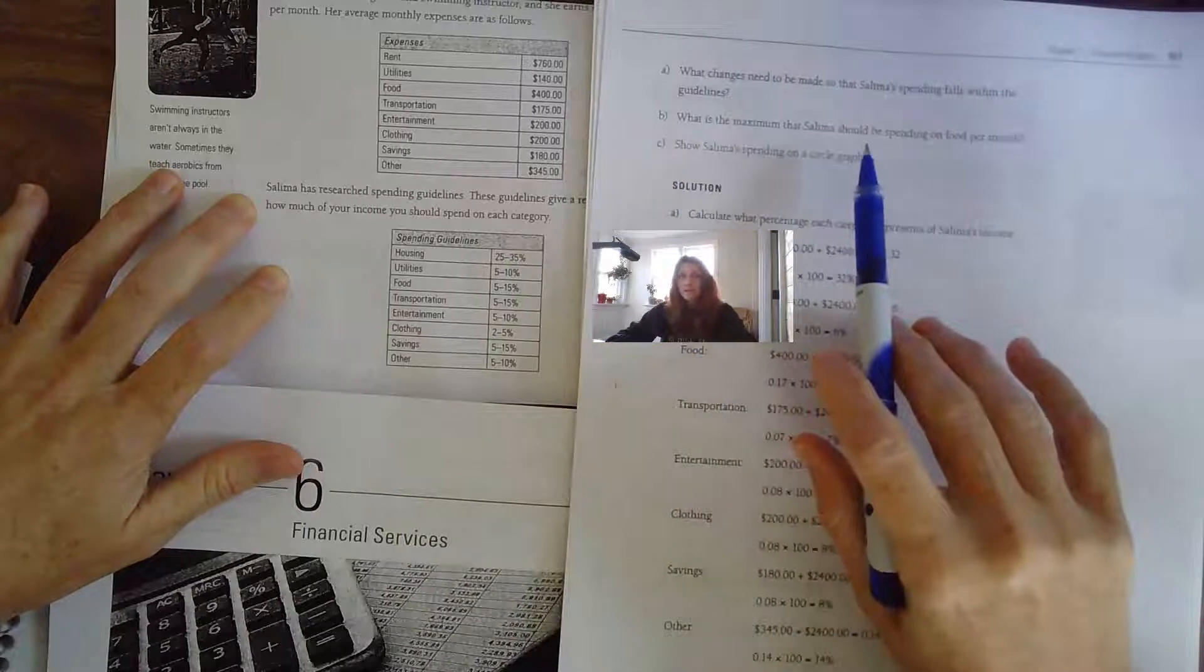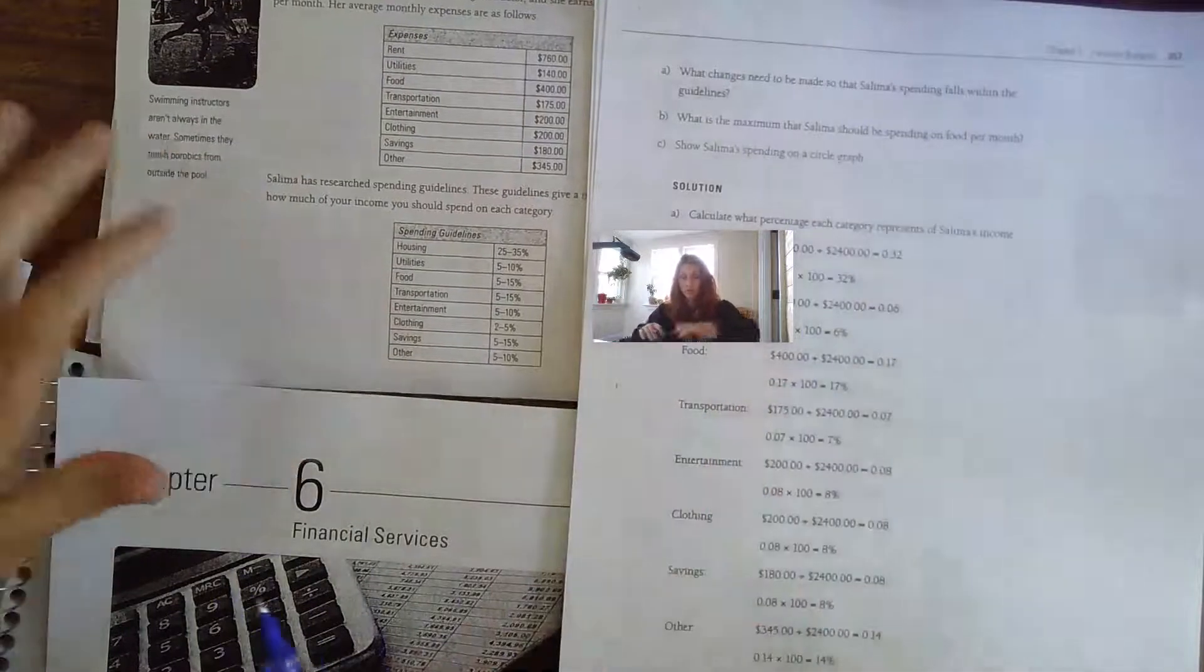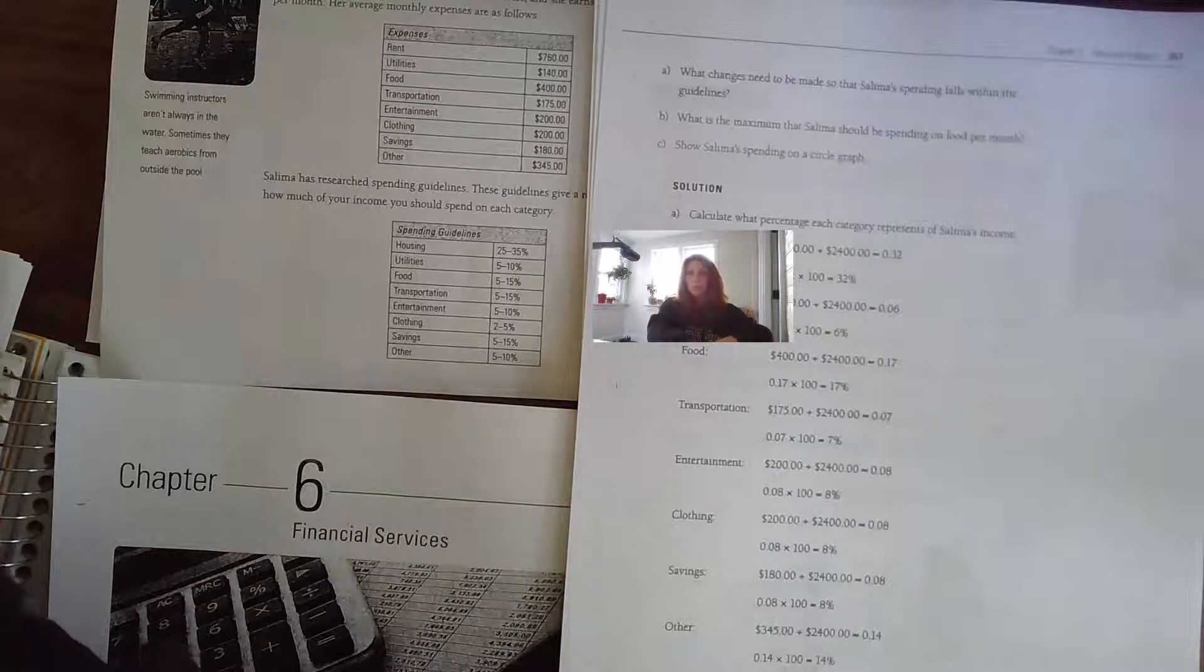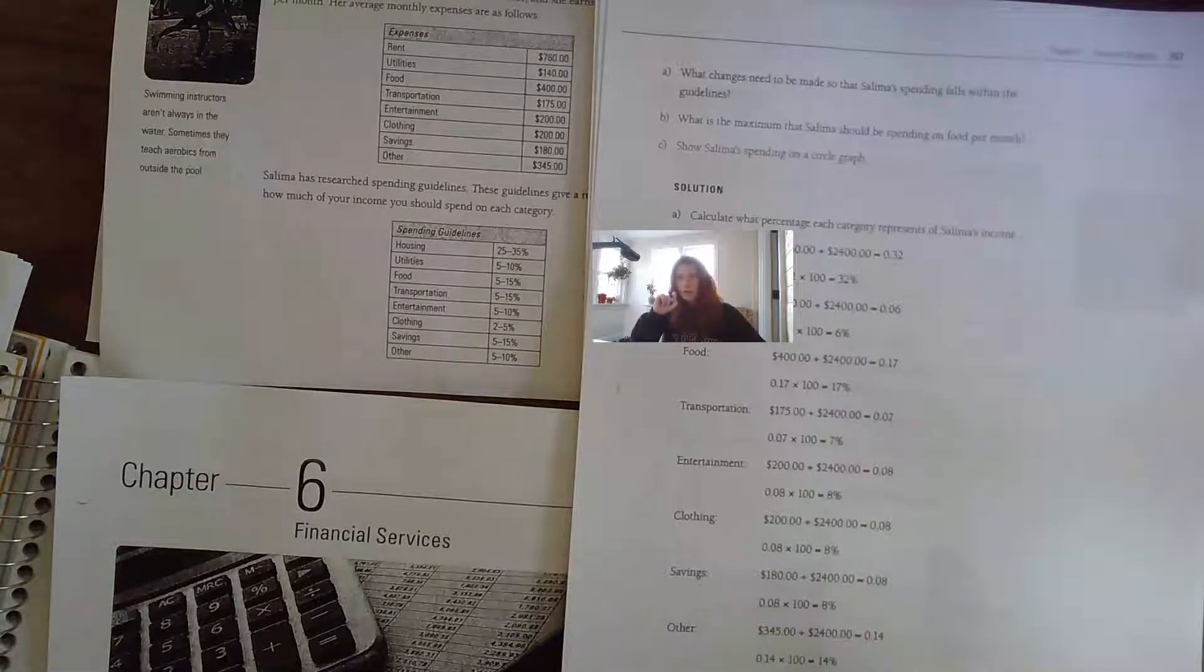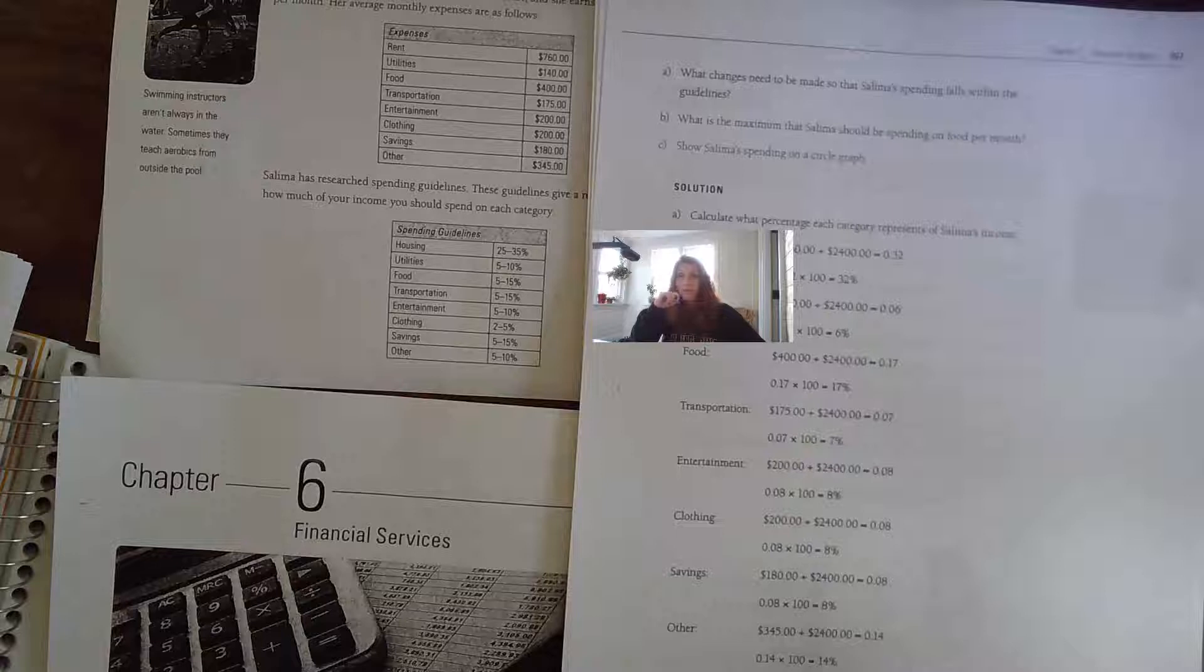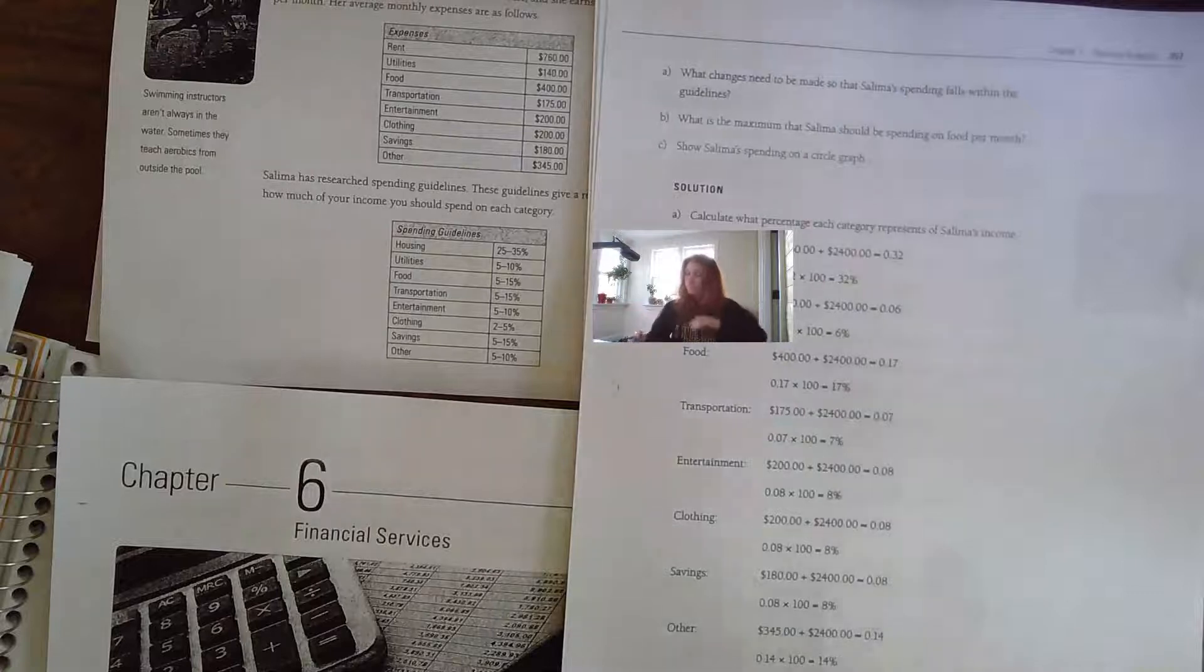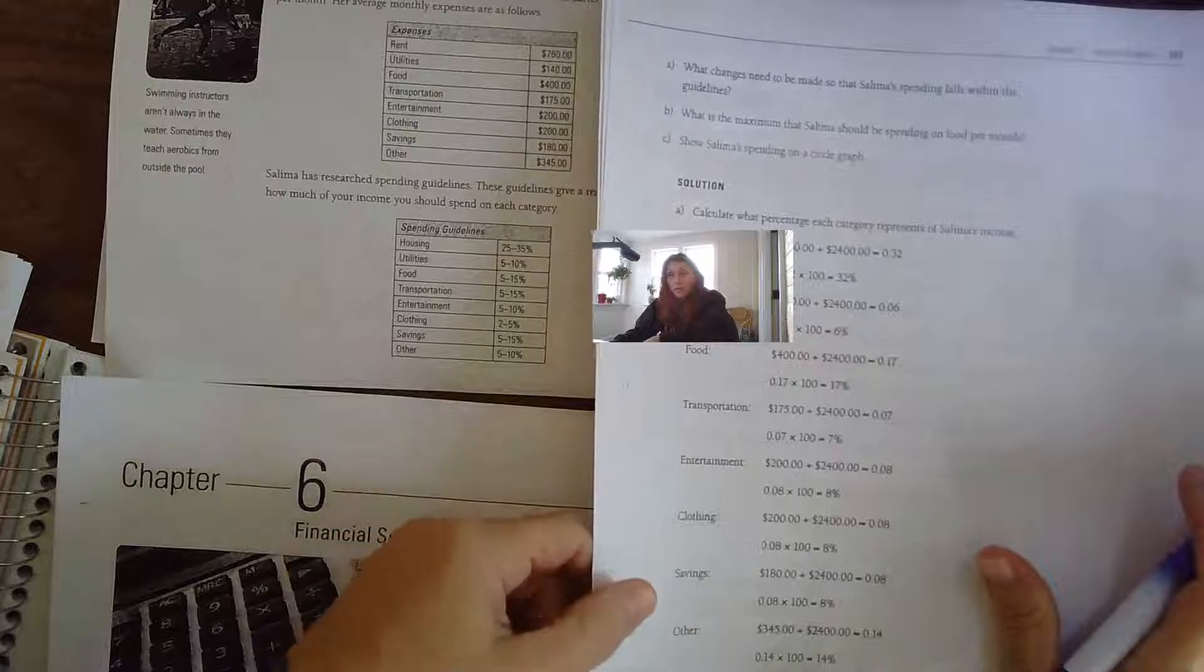The question also asks what is the maximum that Salima should be spending on food per month, and to show Salima's spending on a circle graph. That part we will do when we are face to face. To be able to do that, you're going to need a protractor. Make sure you have a protractor to measure the angles in our circles. You need to have that for Friday's class.